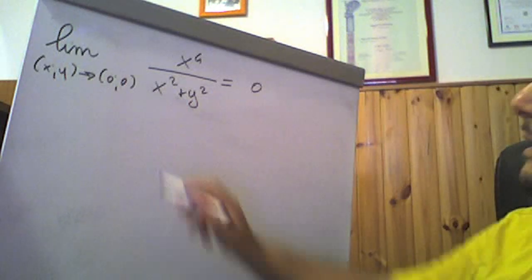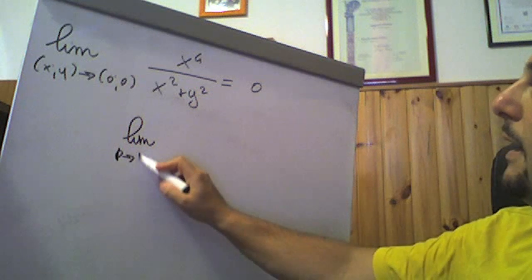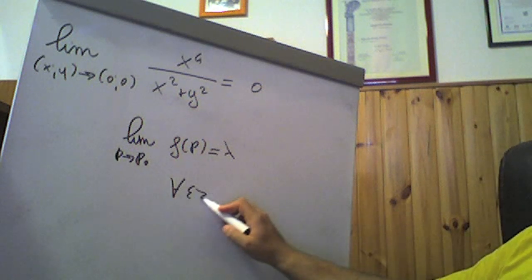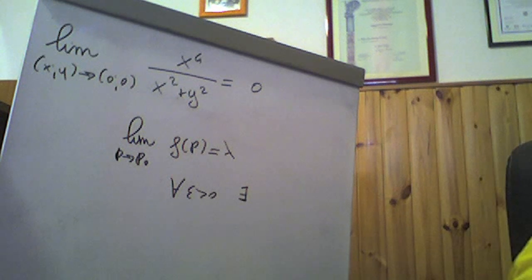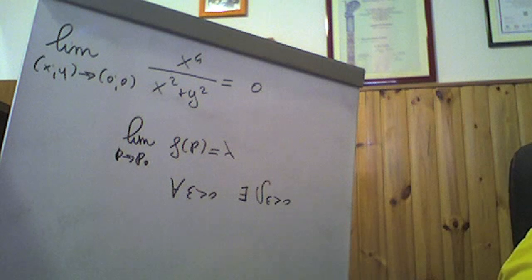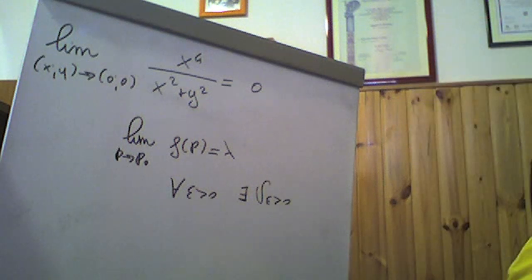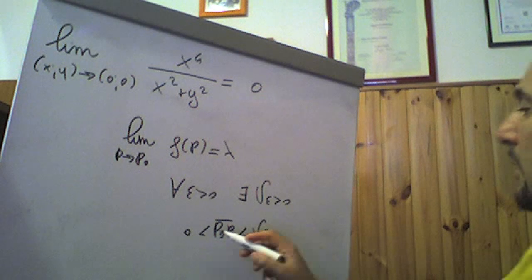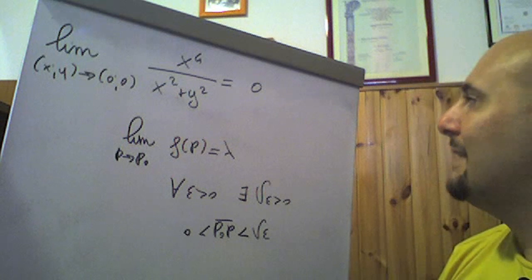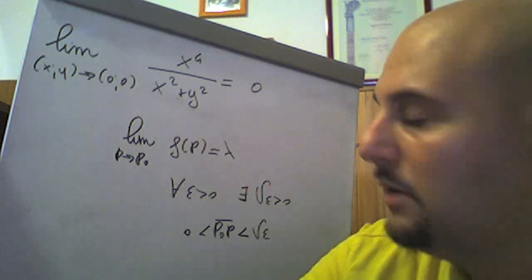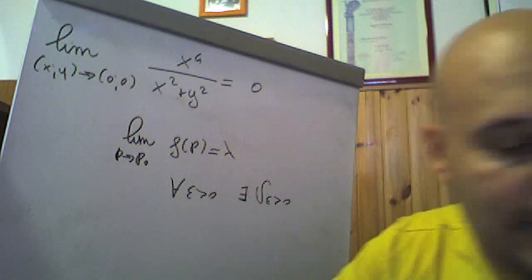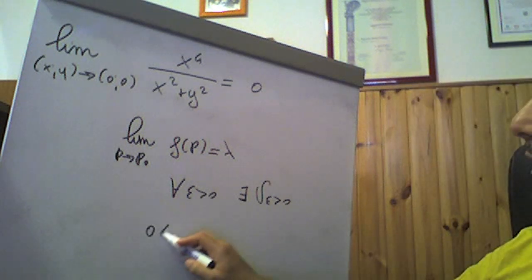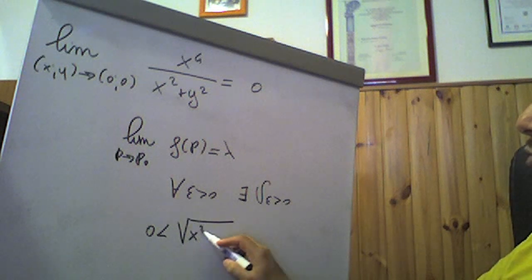Applichiamo la definizione di limite. La definizione dice che il limite per P che tende a P₀ di f(P) è pari a λ se, comunque si fissi un epsilon positivo, esiste in corrispondenza un delta positivo dipendente da epsilon, tale che per tutti i punti (x,y) che verificano la relazione 0 < |P₀P| < delta, dove |P₀P| è la distanza, cioè radice di x²+y², risulti che la nostra funzione soddisfi la condizione richiesta.